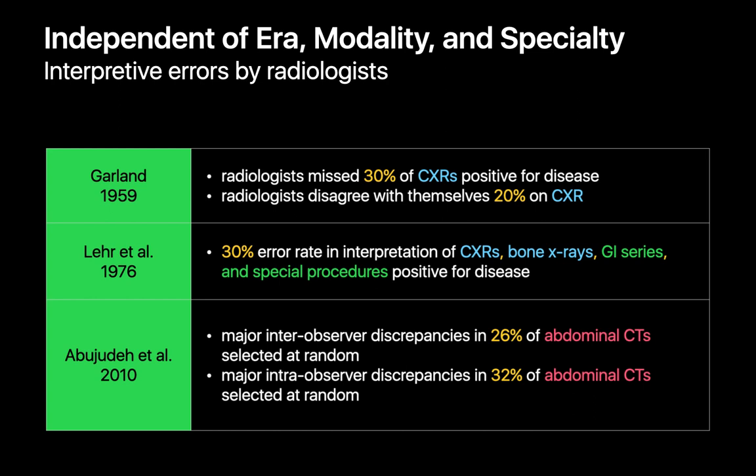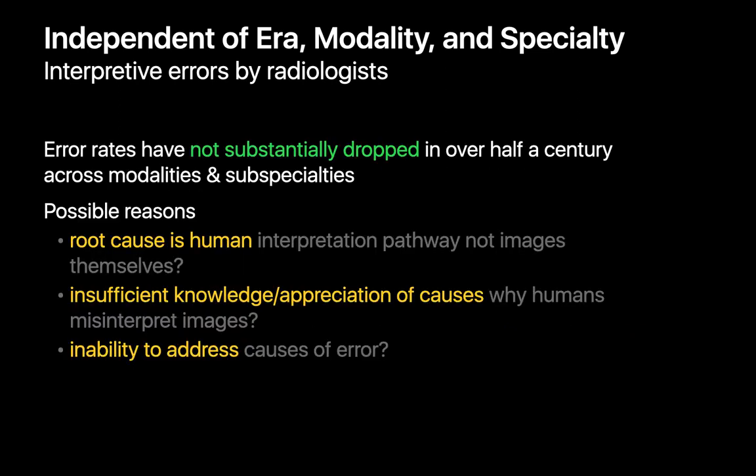The error rates of radiologists in these studies are all about the same, whether the study was in the 1950s, 1970s, or 2000s, or regardless of whether the studies were chest x-rays on film or abdominal CTs on PACS. These numbers suggest that the root cause of radiologist error may be independent of imaging technology or specialty, but rather inherent to how humans process information and think.